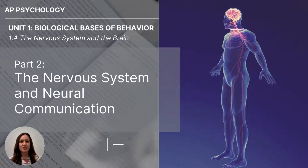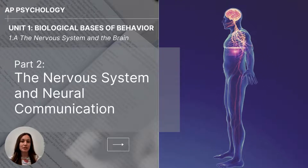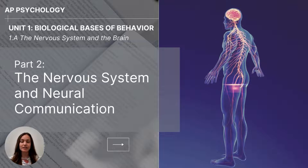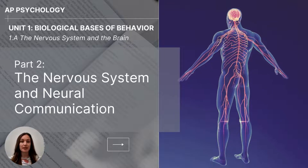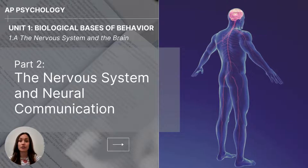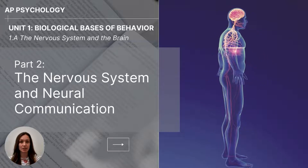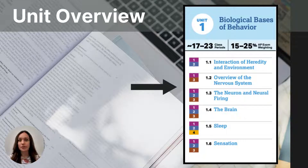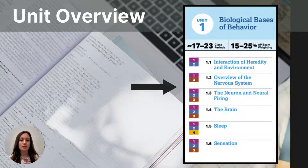Hi everyone, my name is Jolie McCrary and this particular video is for AP Psychology students. It is part two of the biological basis of behavior unit and focuses on the nervous system and neural communication. This video falls under College Board Unit 1, topics 1.2 and 1.3, and covers the overview of the nervous system, the neuron, and neural firing.